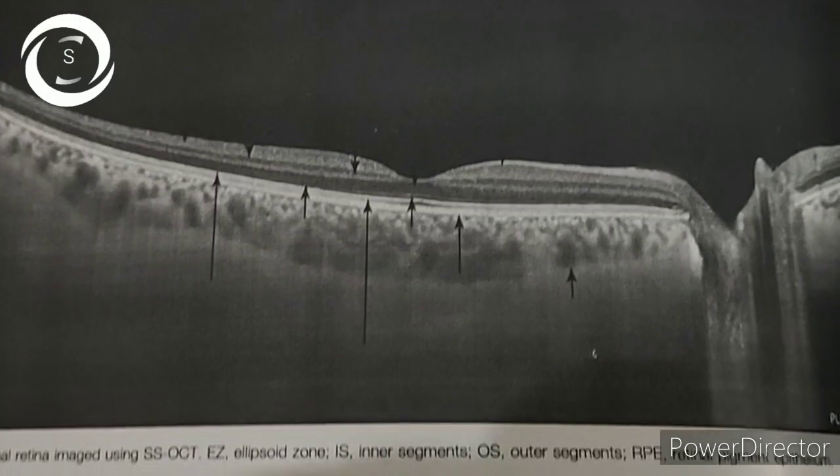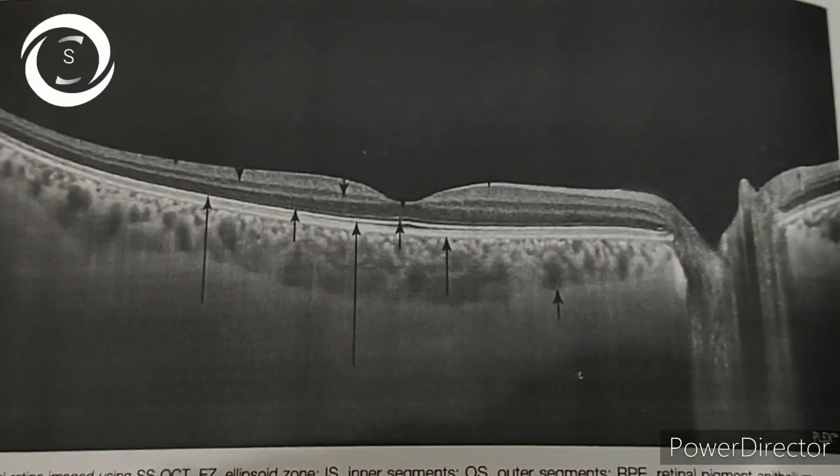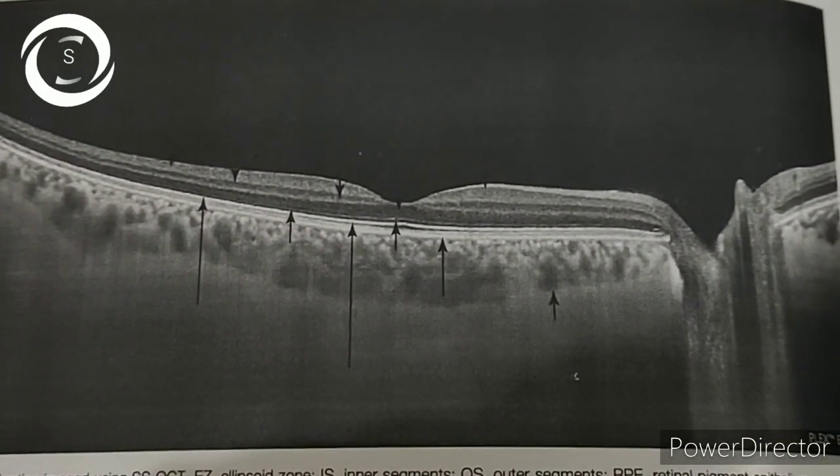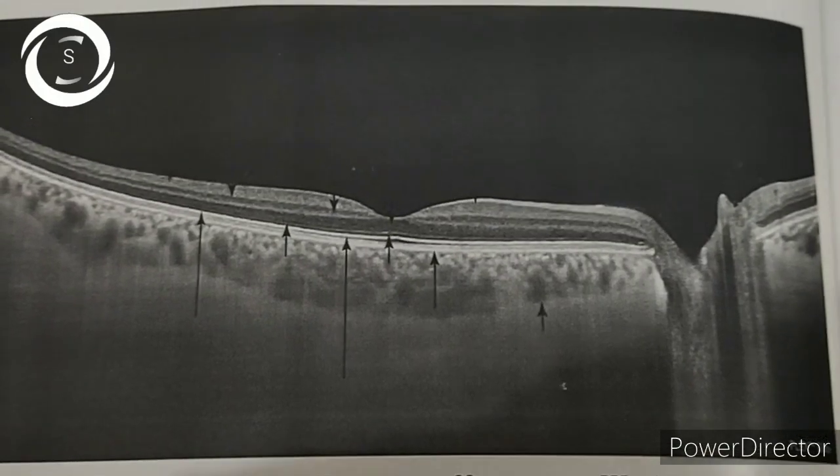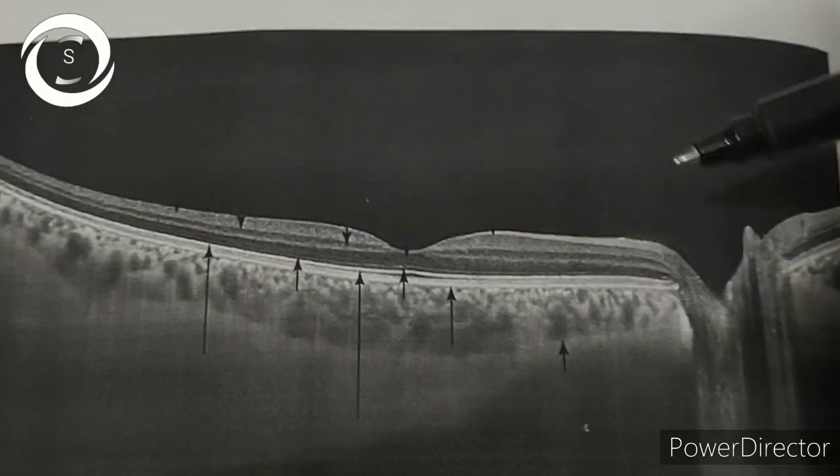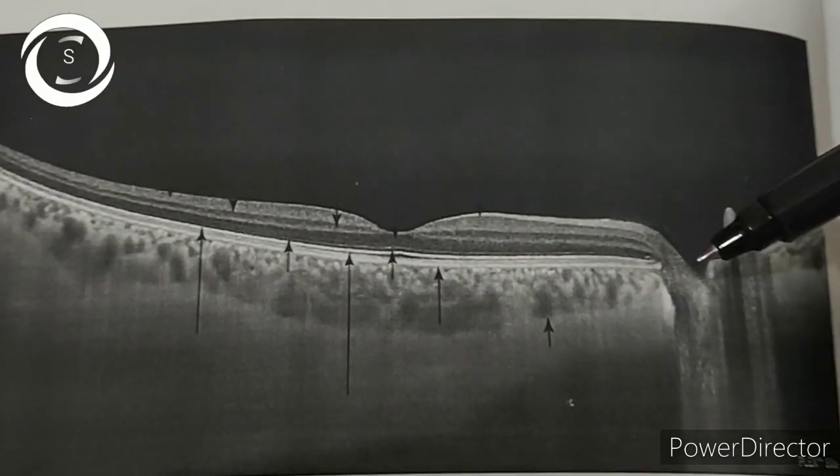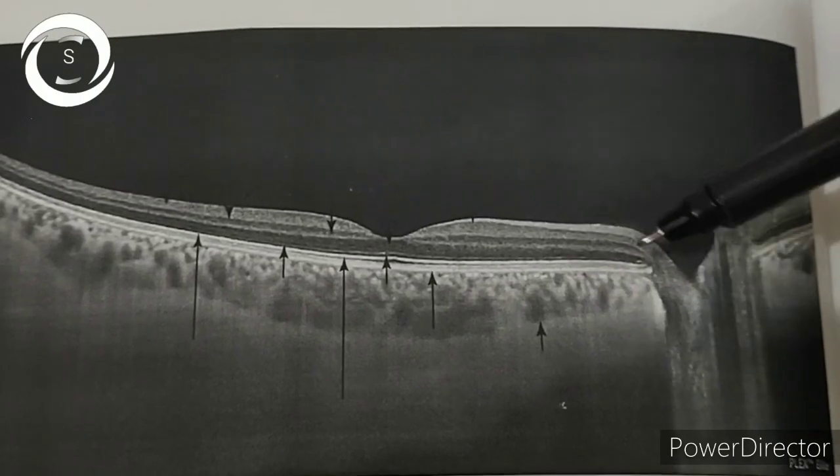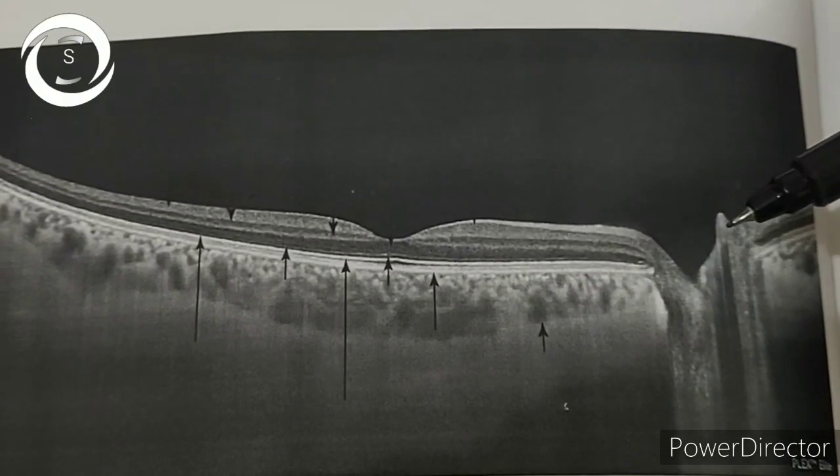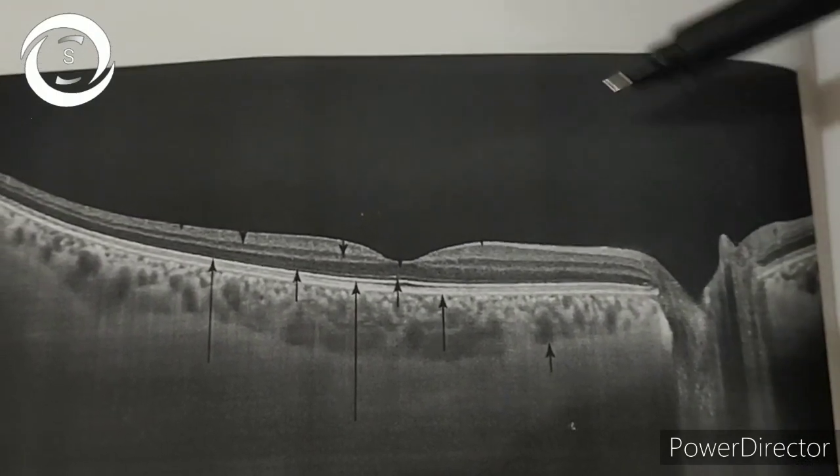Now I am showing you the swept source OCT grayscale, black and white printout. Here also the optic disc is on the right side, so it is the right eye OCT macula of the swept source. You can see the disc, the depression of the disc. So after the determination of the eye...